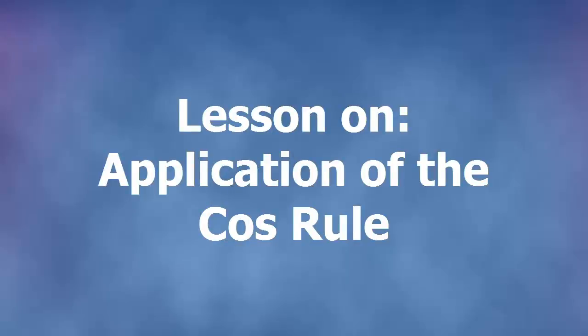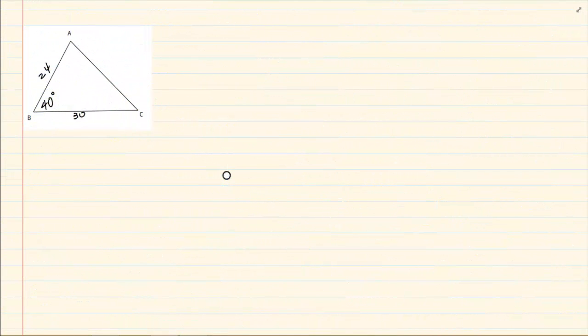Hi and welcome to my maths class. Today we are going to do cos rule application. Now you know the cos rule. It says that a squared is equal to b squared plus c squared minus 2bc cos A.